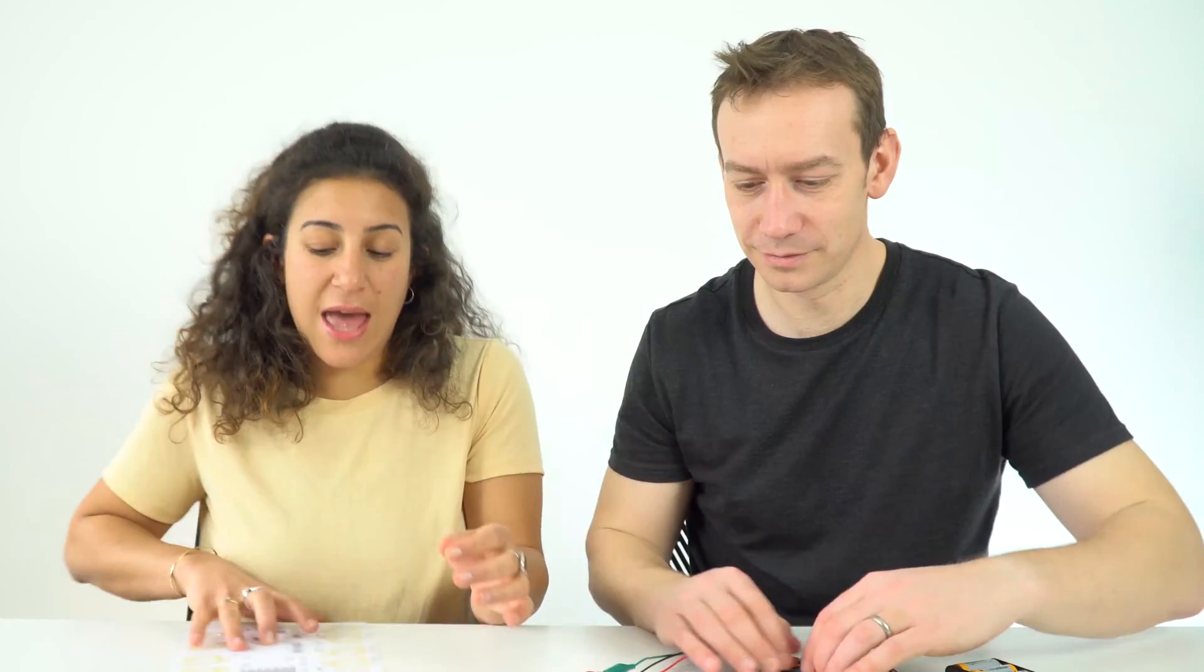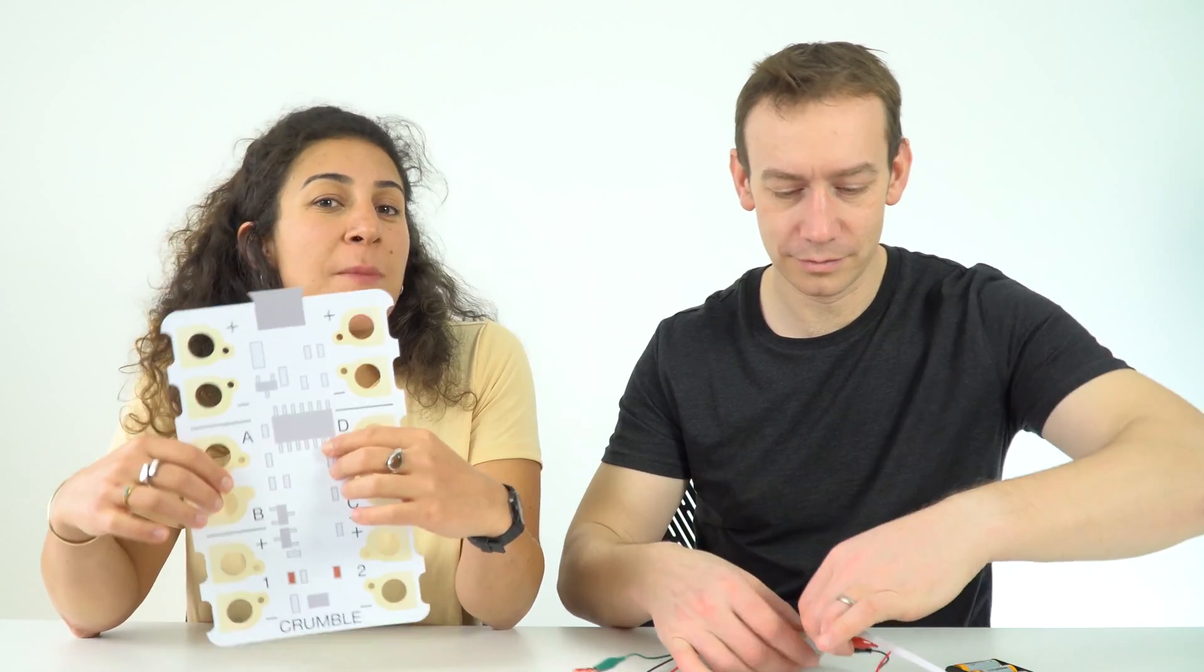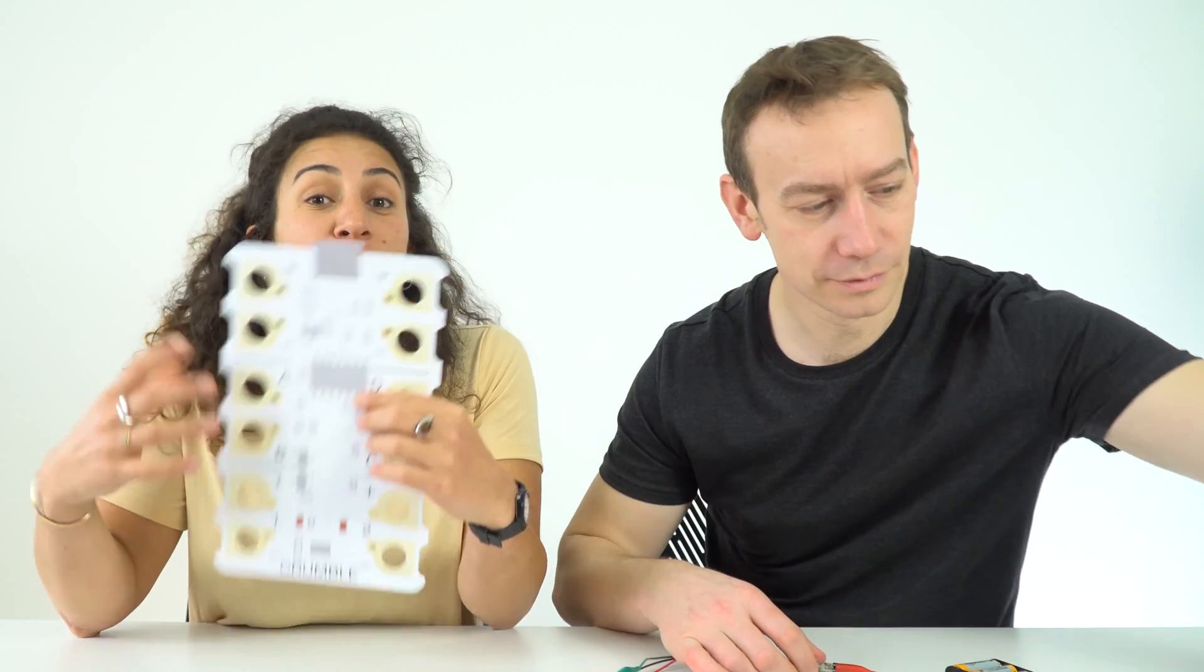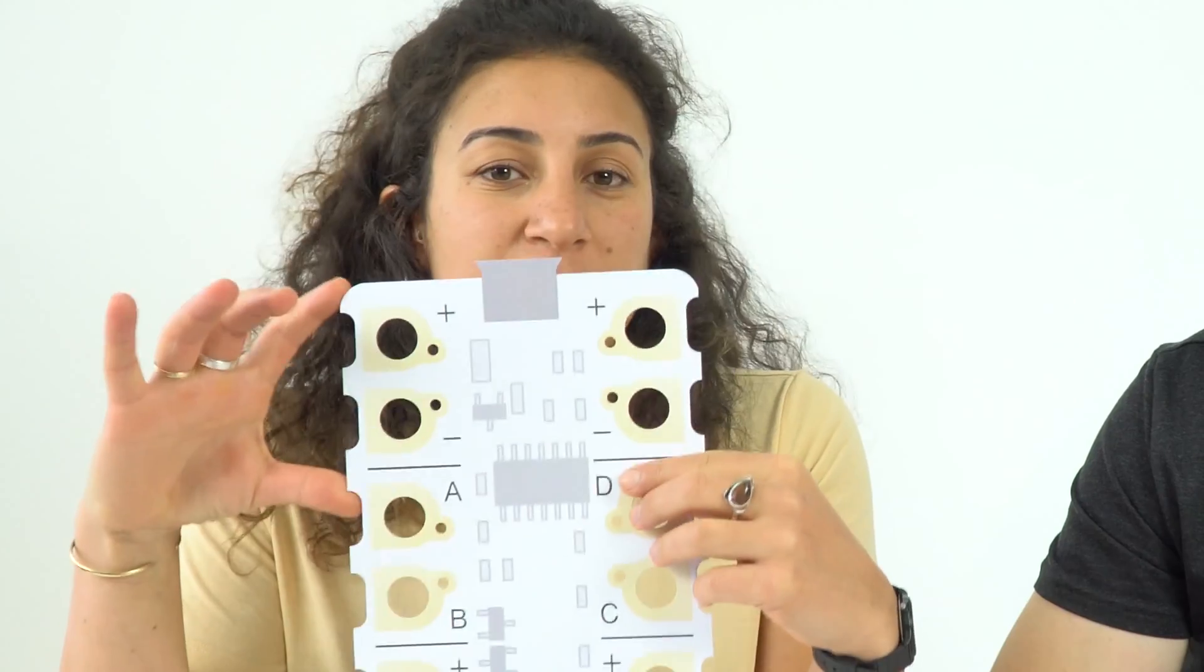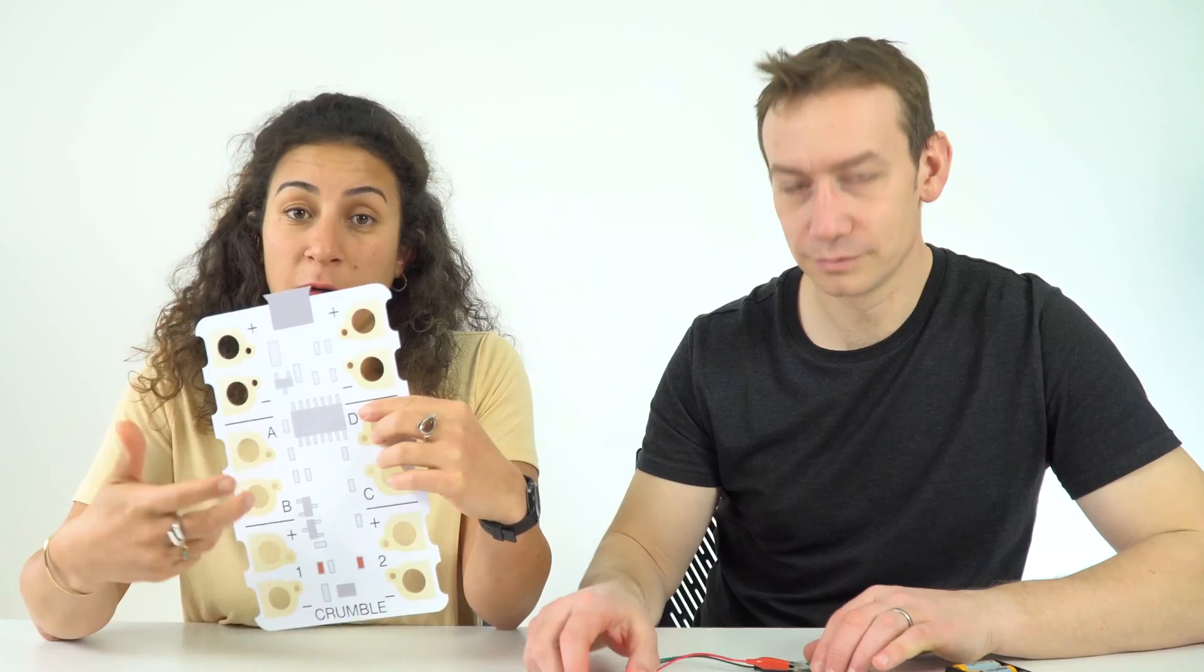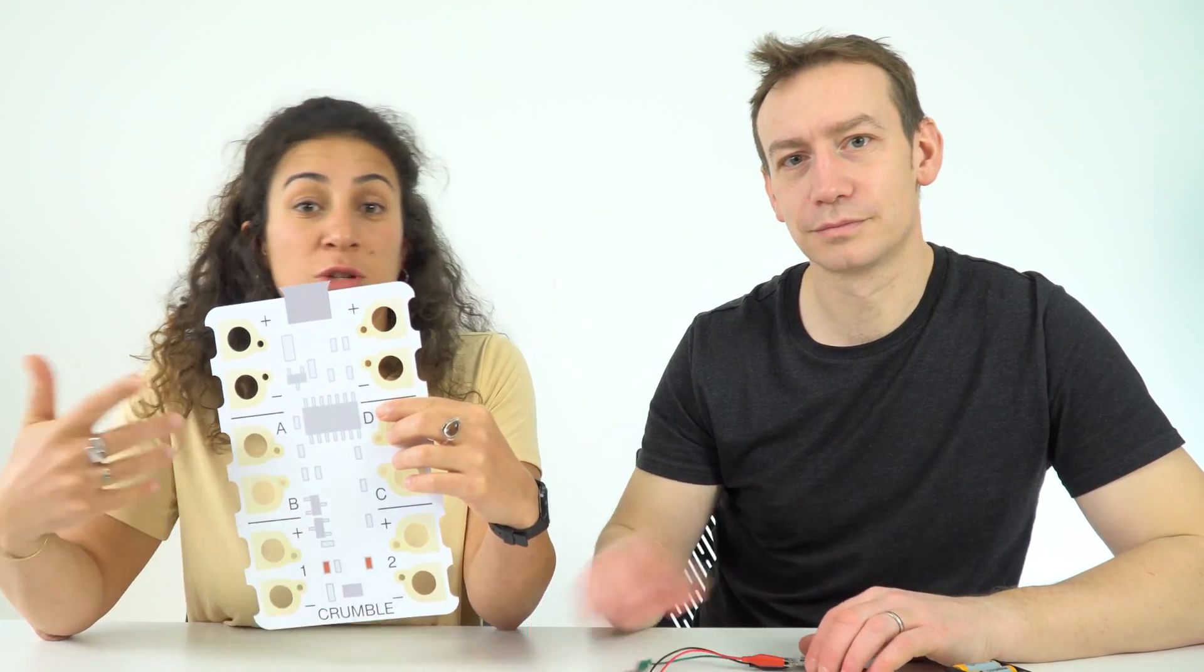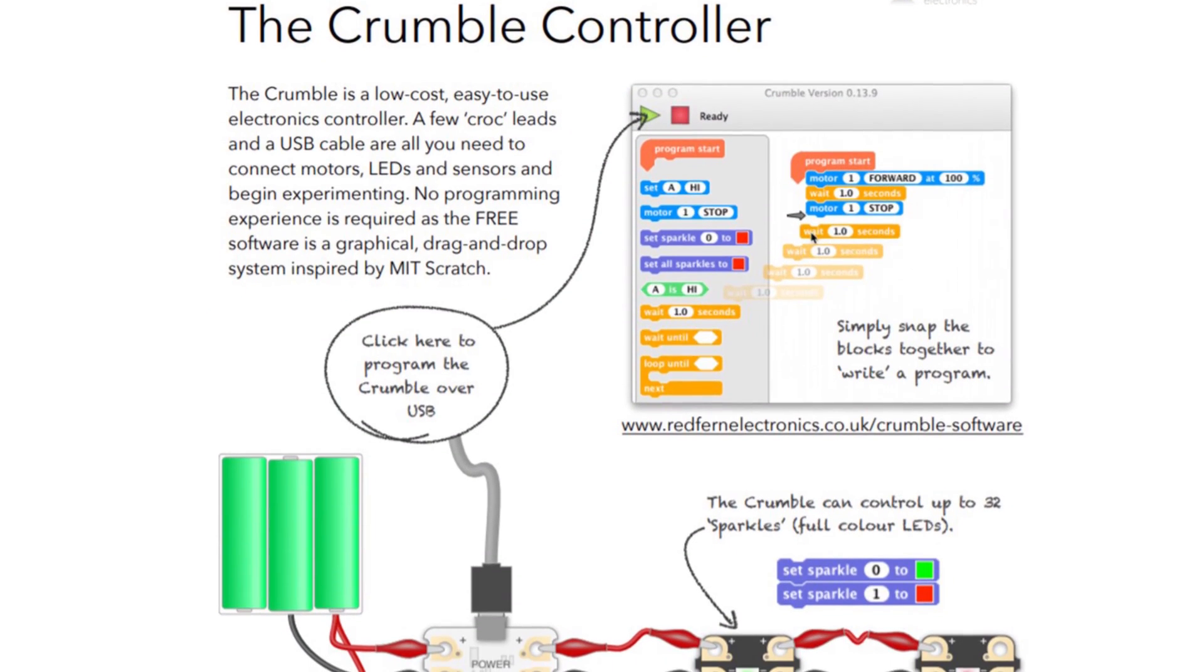We've also included in the box an A4 cardboard Crumble board, which might be a useful way to show your students in a classroom how the Crumble setup is. The top section is for power, the middle section is for your input and output—in the case we just saw, that was for the sparkle, but that could also be your buzzer or switches. If you download the Redfern getting started guide, it explains all that in detail. The last section is for motors.